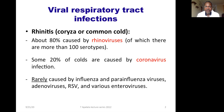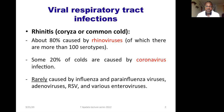We have several serotypes of rhinoviruses. That's why you have different flu vaccines, depending on the commonest serotypes that can occur. The rest are caused by different coronaviruses. It is very rare to see common cold caused by influenza or parainfluenza viruses, adenoviruses, RSV, or other enteroviruses. When we speak about rhinitis, remember rhinoviruses.